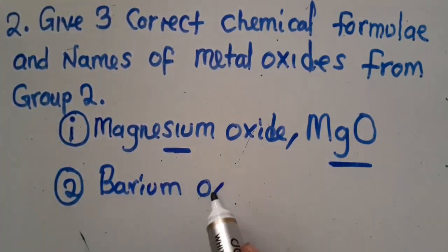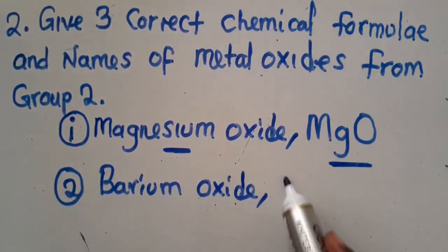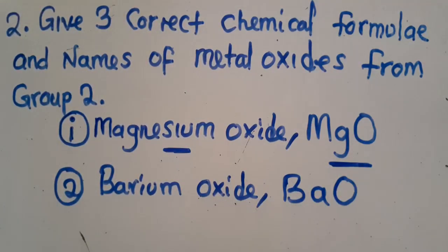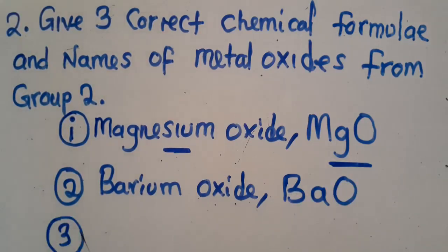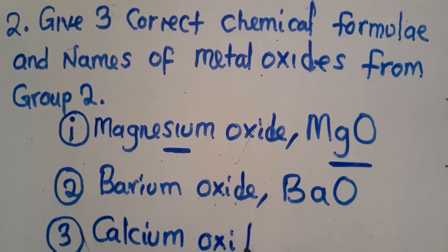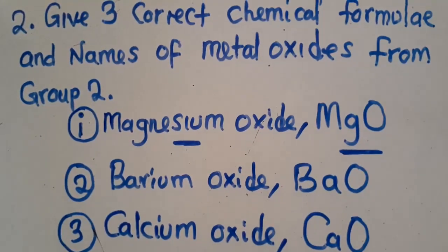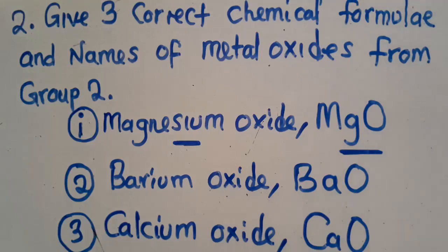You can also talk of barium oxide, BaO. The valences cancel out just the same. Then move to the third one — calcium oxide, CaO. All these are called metal oxides. This is very simple to know and understand. No one should fail this in an exam.